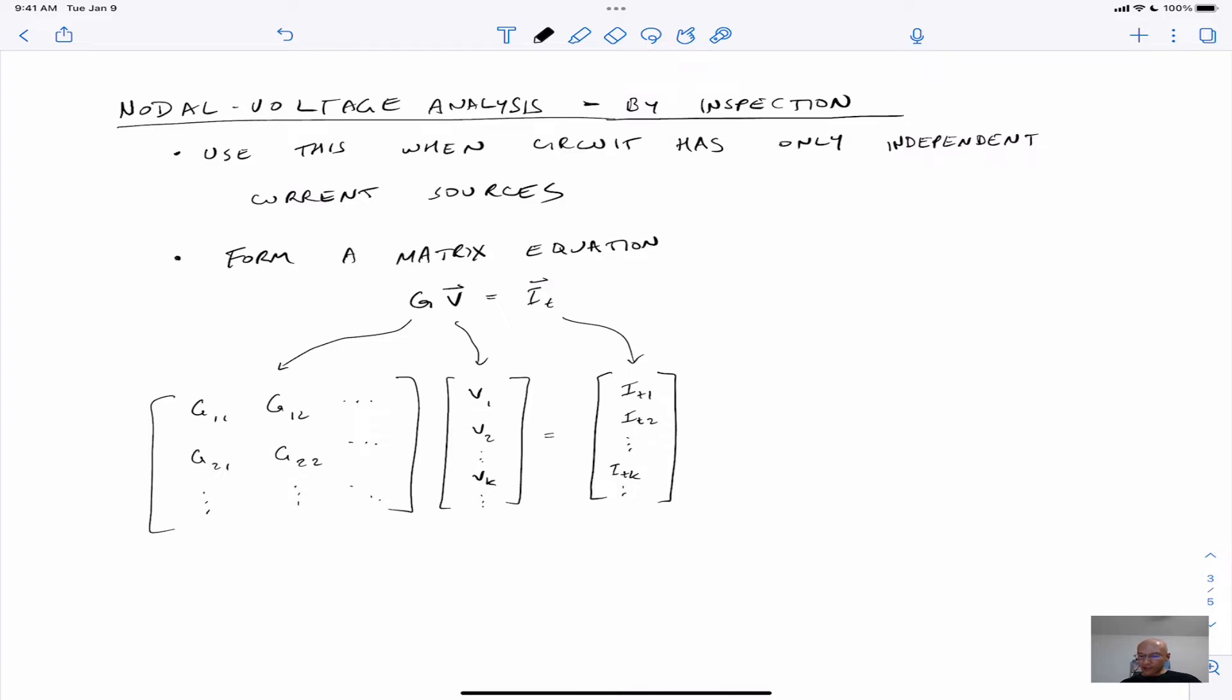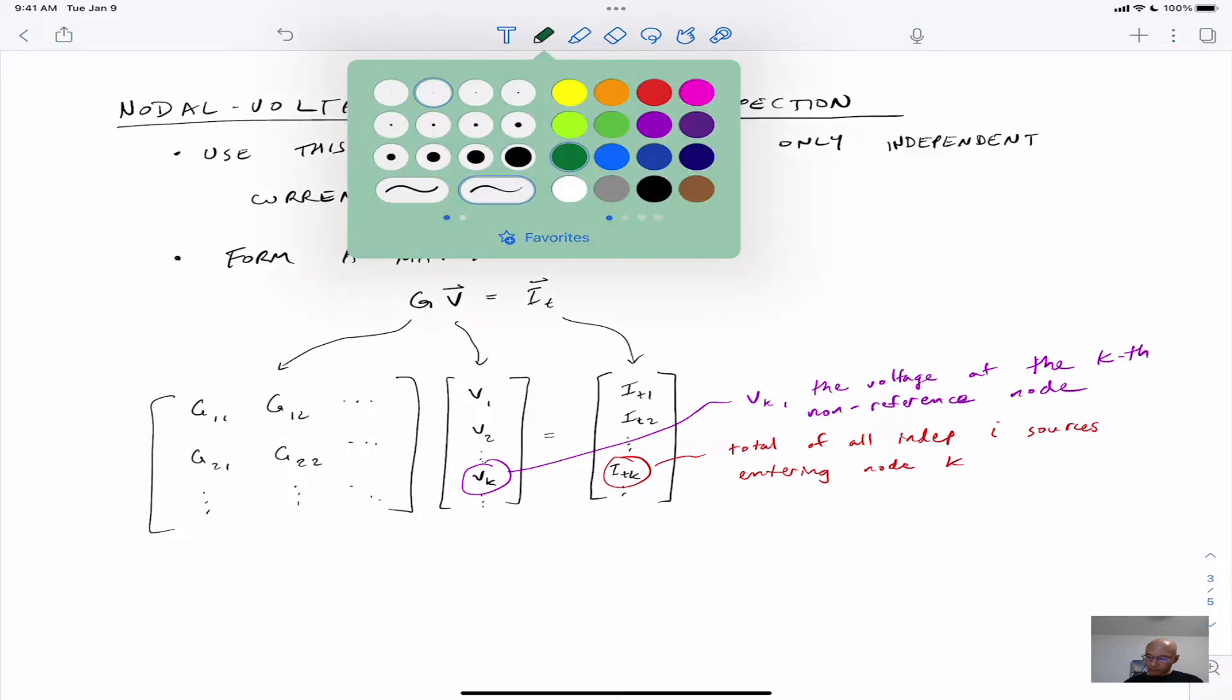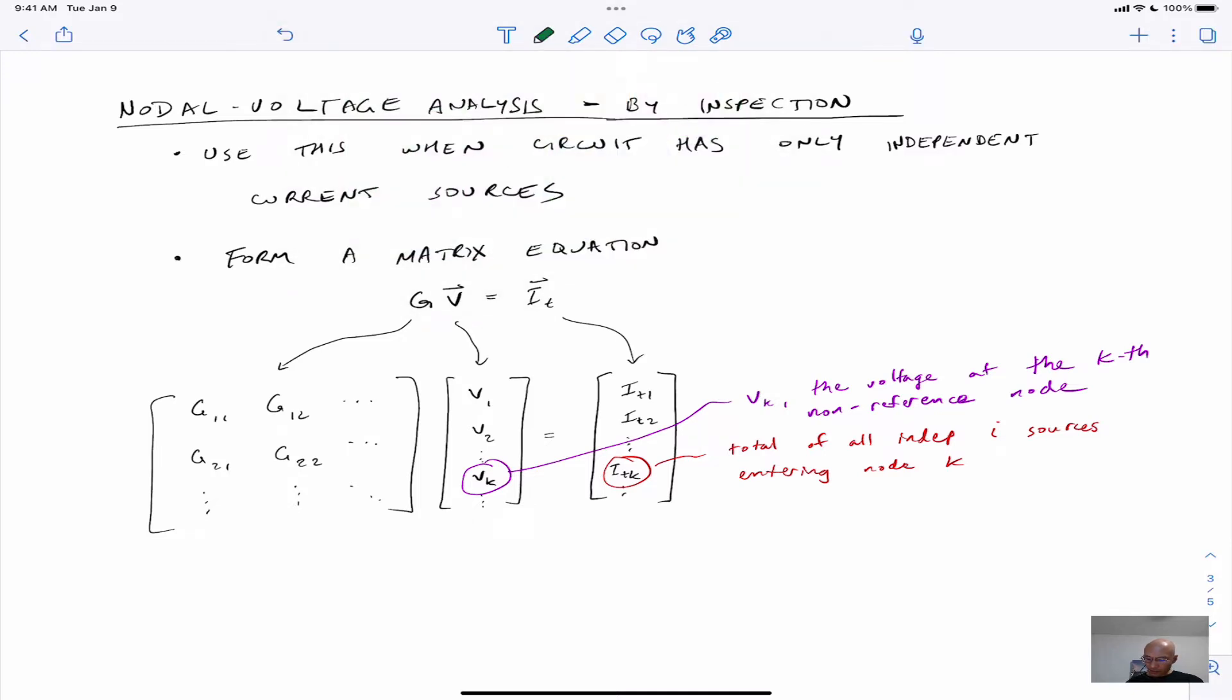So let's just identify the different elements here. So the kth element of I_T is the total current from all sources entering the kth node. V_K is the node voltage at the kth node. Now we focus on the G's. For the G's, we have diagonal elements, and the diagonal elements are the sum of all conductances connected to the kth node.